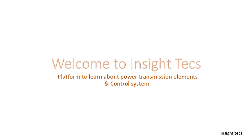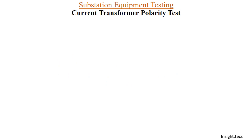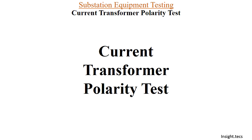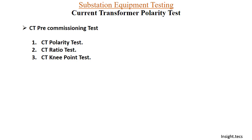Welcome to Insight Text, a platform to learn about power transmission elements and its control systems. In the substation testing equipment series, today we will see what are the different kinds of tests that can be done on the current transformer. Today's video covers the CT polarity test. Other pre-commissioning CT tests include CT ratio test, CT knee point test, tan delta test, and IR value test.